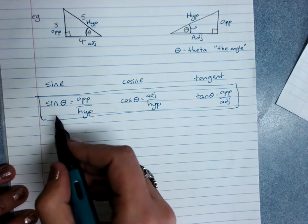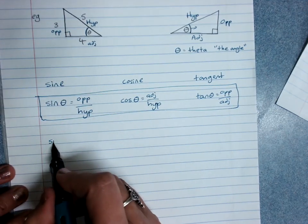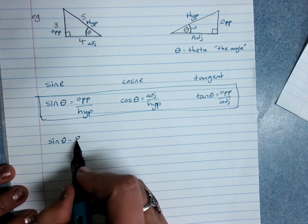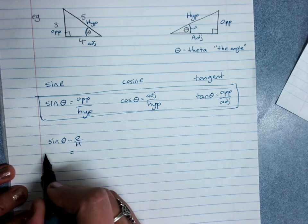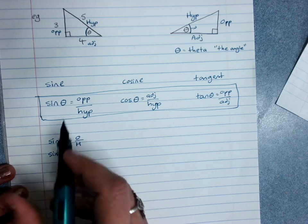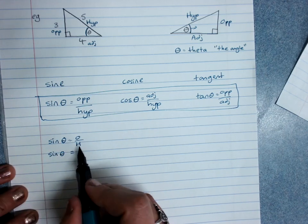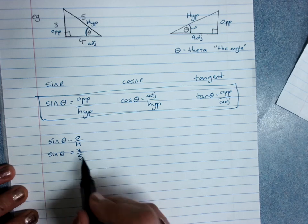To write sine theta for this triangle, we'd write sine theta equals opposite over hypotenuse, and then substitute in. We don't know the angle, so we leave it as theta. Opposite is 3, hypotenuse is 5.